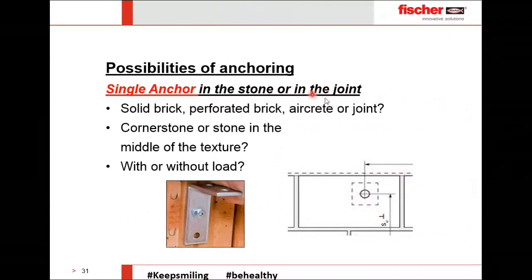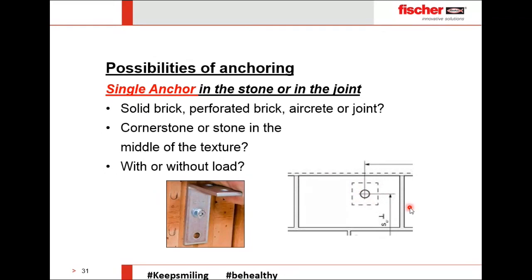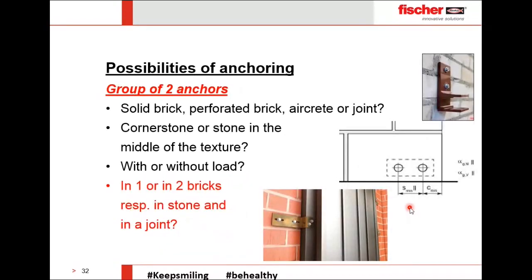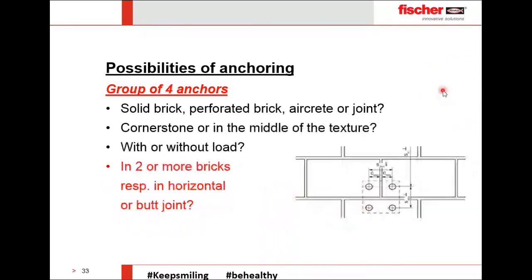There are different possibilities of anchoring. The first is a single anchor in stone or joint — it can be in the center or on the edges or reveal side, and the position affects load capacity. Center placement may take maximum load differently than edge placement. The second possibility is a group of two anchors — if both are in the same block, load distribution is limited; if in two different blocks, load distribution expands and strength increases.